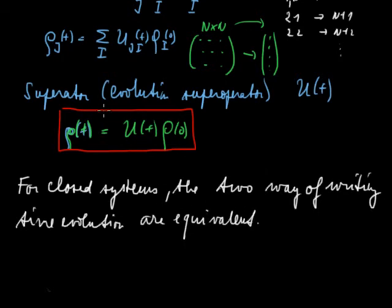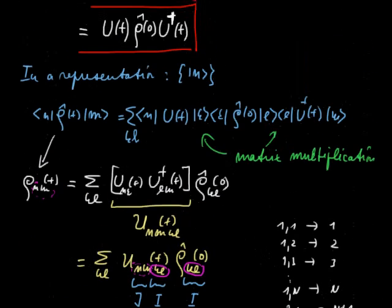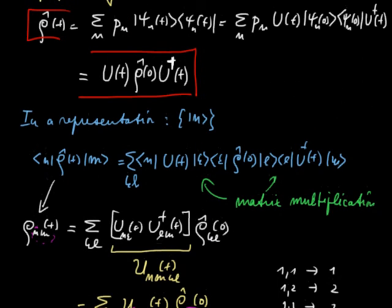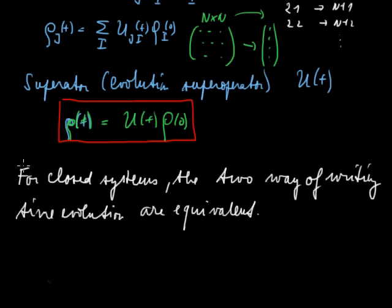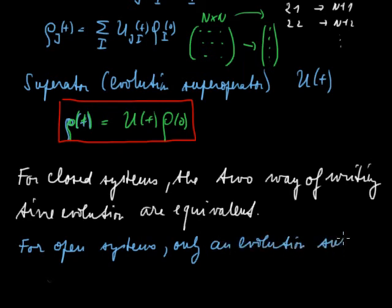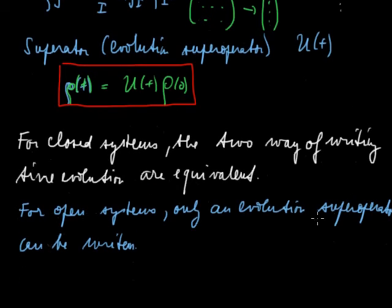But for open systems, this super operator approach enables much more flexibility, and in fact this one enables to include interaction with the surrounding. Again, this approach, I'm writing the time evolution of the density matrix using evolution operators, this is not possible for a system that is open. So for open systems only an evolution super operator can be written. Basically, an open system does not have an evolution operator. None can be written.